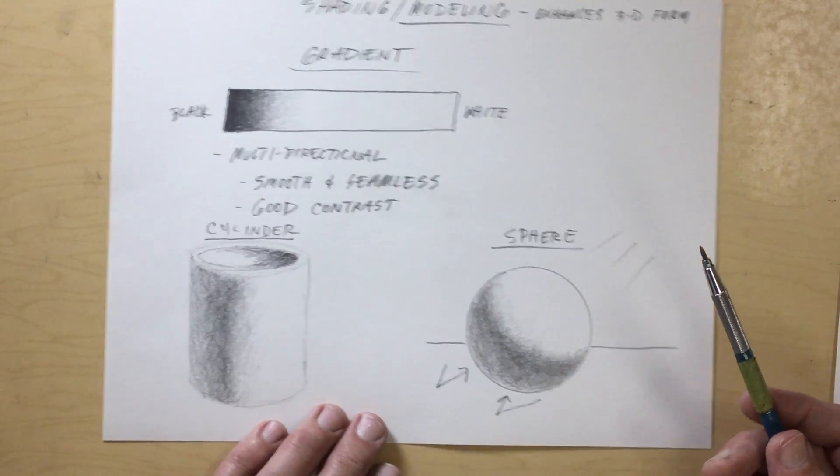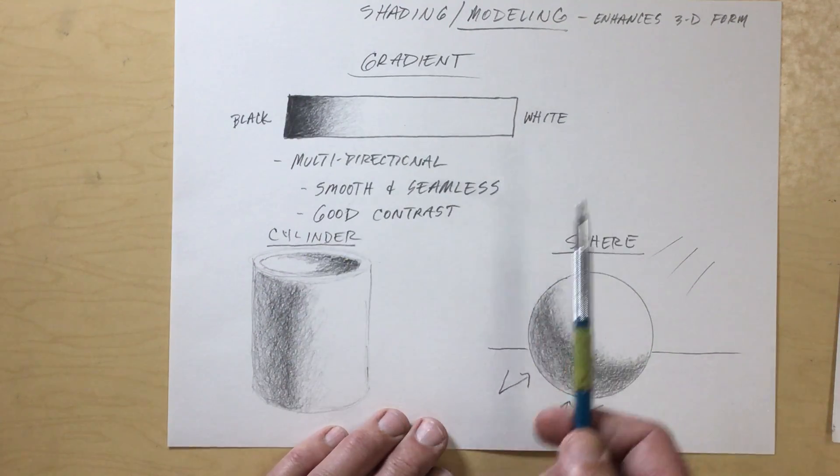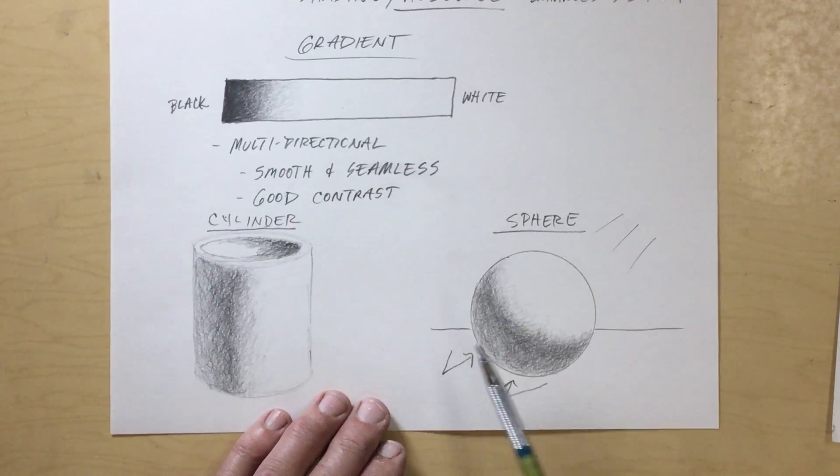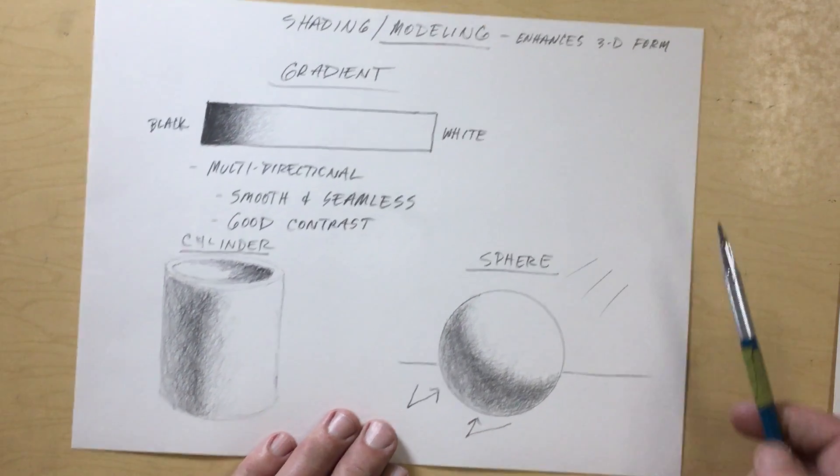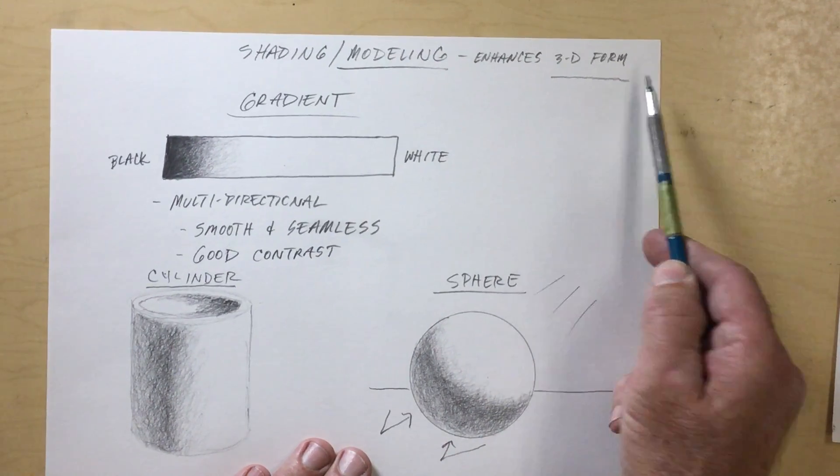Okay, and there you have it. We've got our gradient, we applied our gradient to our cylinder and our sphere to create the illusion of three-dimensional form.